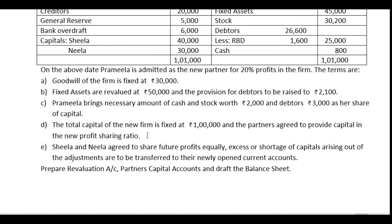The total capital of the new firm is fixed at Rs. 1,00,000 and the partners agree to provide capital in the new profit sharing ratio. This information tells you that in this problem we have capital adjustment. Sheila and Neela agree to share future profits equally. Excess or shortage of capital arising out of the adjustments are to be transferred to their newly opened current account.